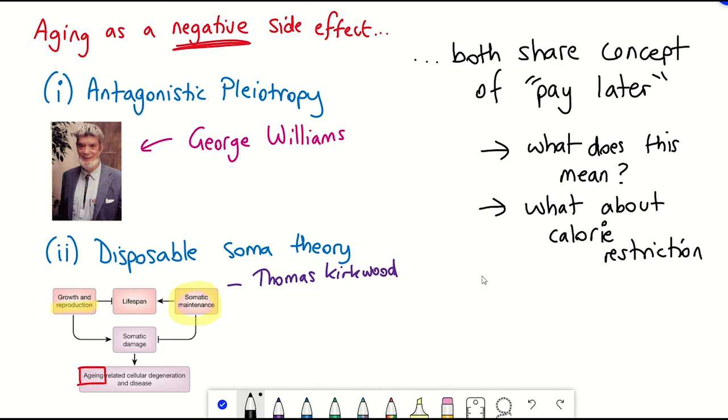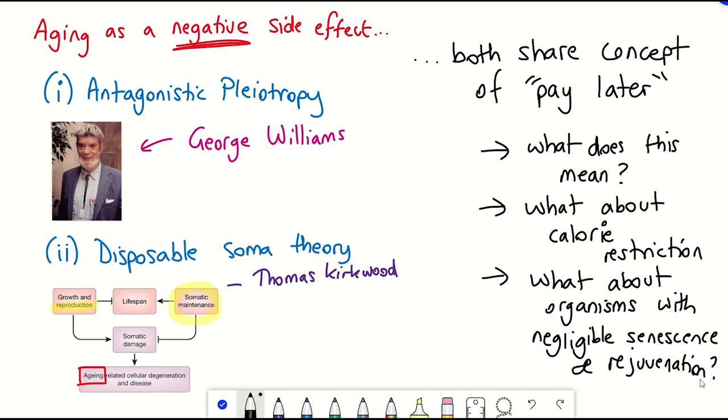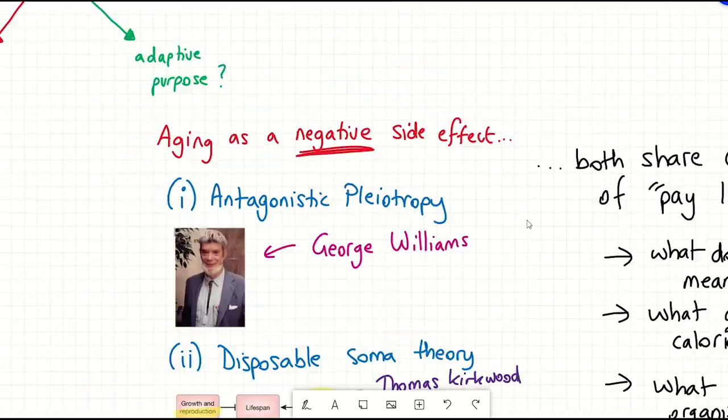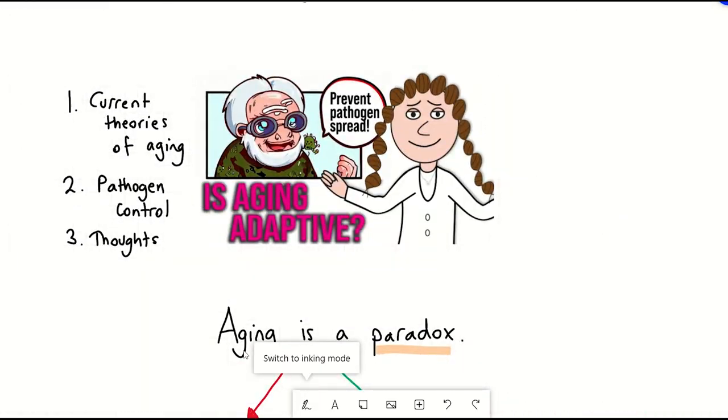If so, why do some organisms appear not to age at all? And why does calorie restriction, the reduction in resources, seem to be one of the only strategies that actually slow the aging process? Plus, there are even examples in natural cases of rejuvenation, for example, in some eusocial organisms. So clearly, these theories didn't fully explain what's observed regarding aging in nature.